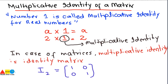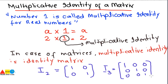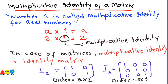If we talk about the identity matrix of order 3×3, it will be: 1 0 0 / 0 1 0 / 0 0 1. This is another identity matrix having an order of 3×3. So the 2×2 and 3×3 are the identity matrices that basically replace the number one of real numbers with an identity matrix in case of matrices.